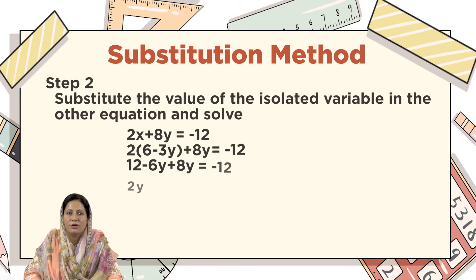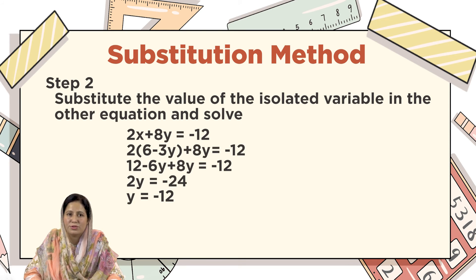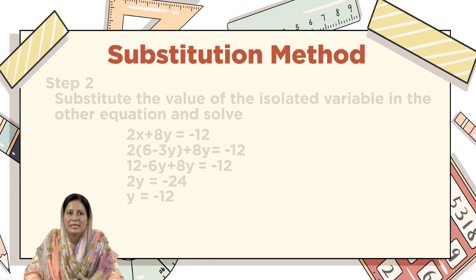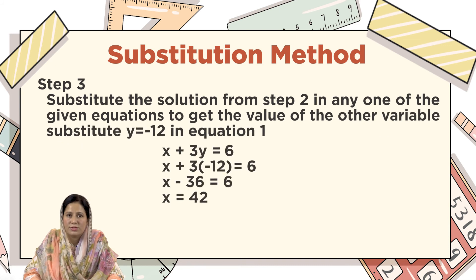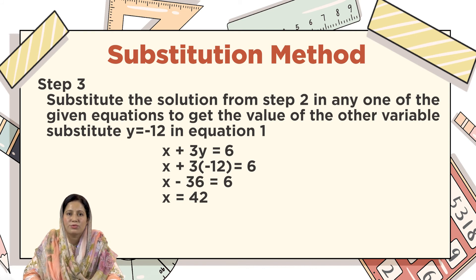Step 2: substitute the value of the isolated variable into the other equation and solve. At the place of x, I have substituted the value 6 minus 3y, and after expanding and adding like terms, I get the value y equals minus 12. Step 3: we substitute the value y equals minus 12 into any one of the given equations. After solving that equation, we get the value x equals 42.